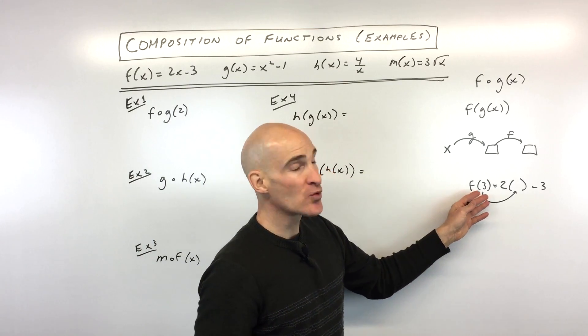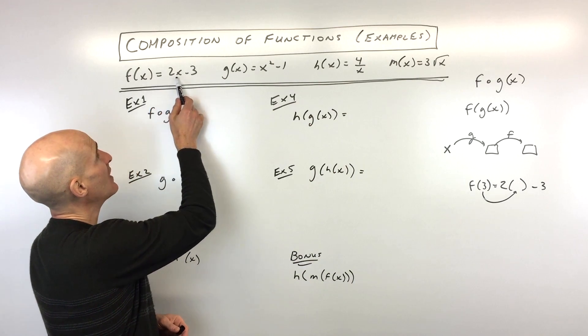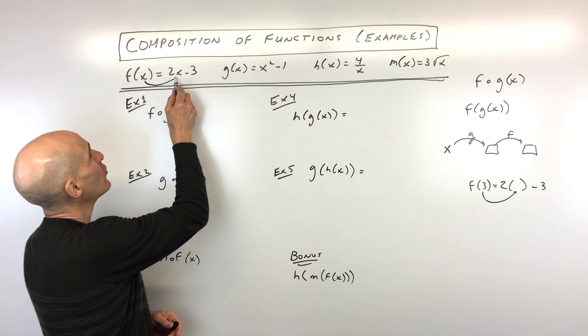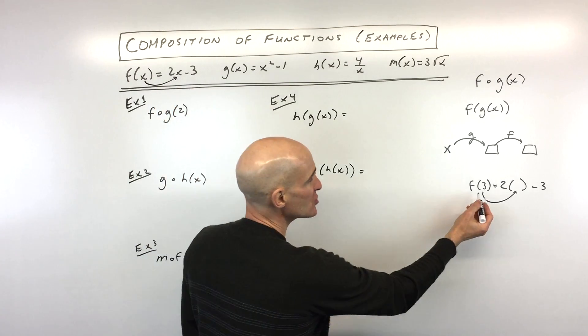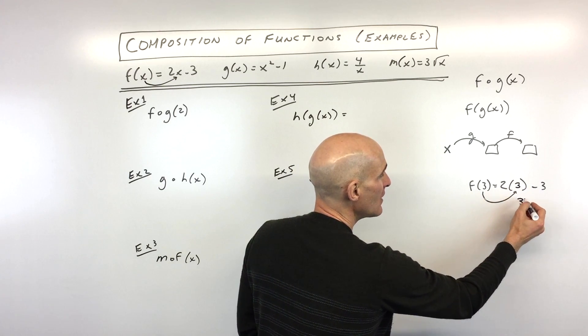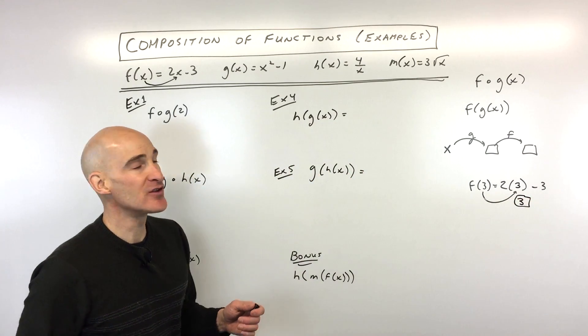The way functions work is that whatever's in parentheses, say for example we're working with this f of x function equals 2x minus 3, whatever's here in parentheses goes in place of x on the right side of the equation. So it's just a substitution. Here we're putting 3 in place of x and then we can simplify that. 6 minus 3, which is 3. Let's get into some examples.